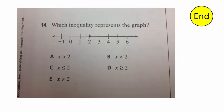We need to match the inequality with the graph shown. If we think of x as representing what the graph says, x would include 2 and everything greater than 2. The filled-in dot means x is equal to 2 or greater than. Looking at the choices, choice D says x is greater than or equal to 2 — that is exactly what the filled-in dot followed by the bolded line to the right represents.